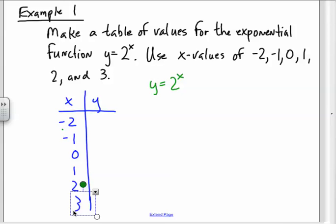Let's see, let's go ahead and use negative 2 and see what I get. So y is equal to 2 to the negative 2. That means that y is equal to 1 over 2 squared. y is equal to 1 fourth.